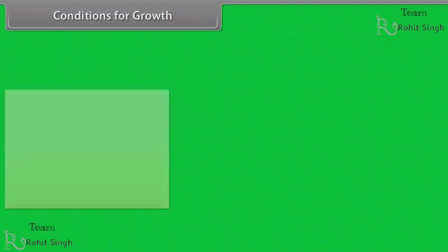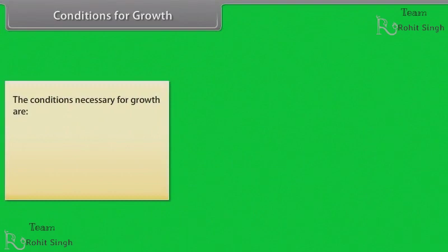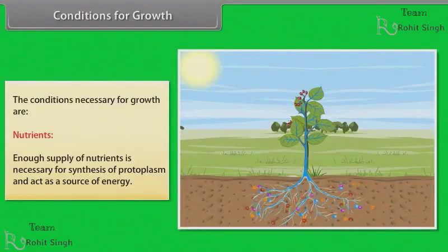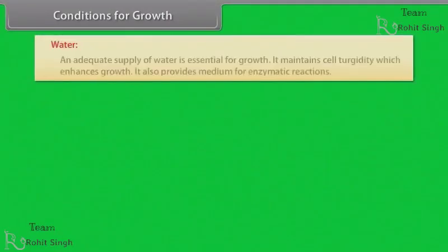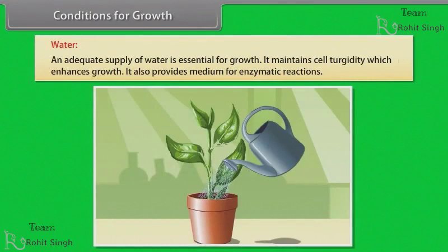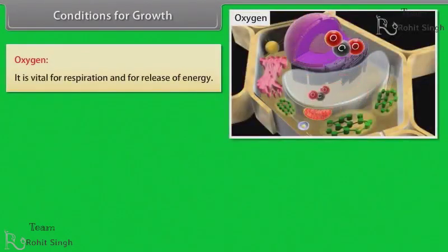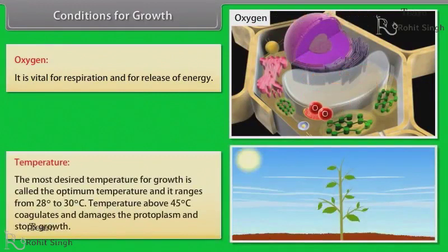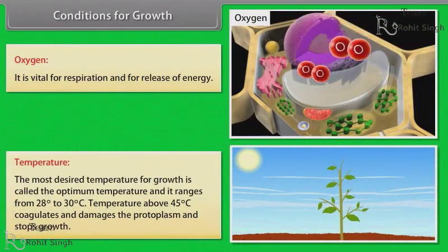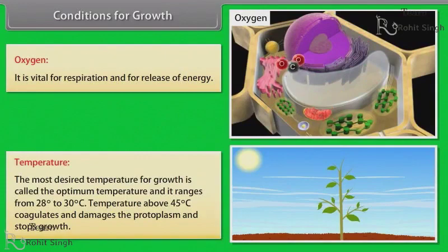The conditions necessary for growth are: Nutrients — enough supply of nutrients is necessary for synthesis of protoplasm and as a source of energy. Water — an adequate supply of water is essential for growth; it maintains cell turgidity which enhances growth and also provides medium for enzymatic reactions. Oxygen — it is vital for respiration and for release of energy. Temperature — the optimum temperature for growth ranges from 28°C to 30°C; temperature above 45°C coagulates and damages the protoplasm and stops growth.